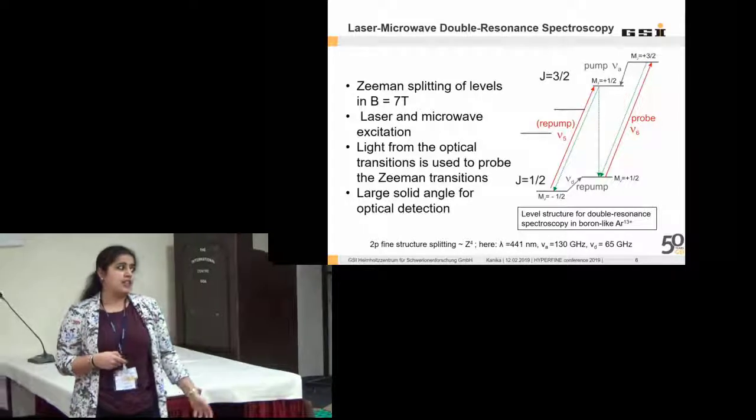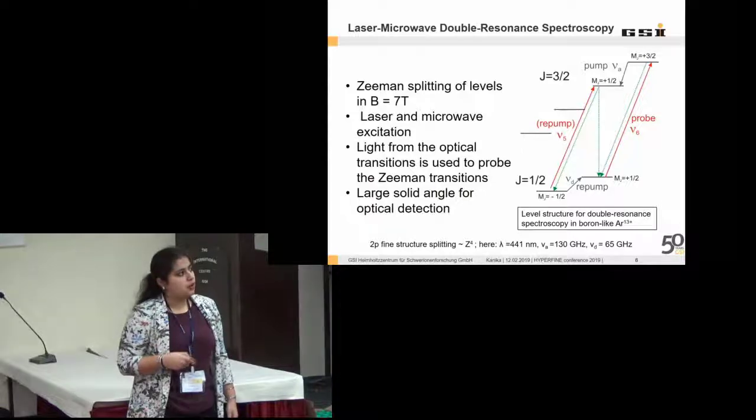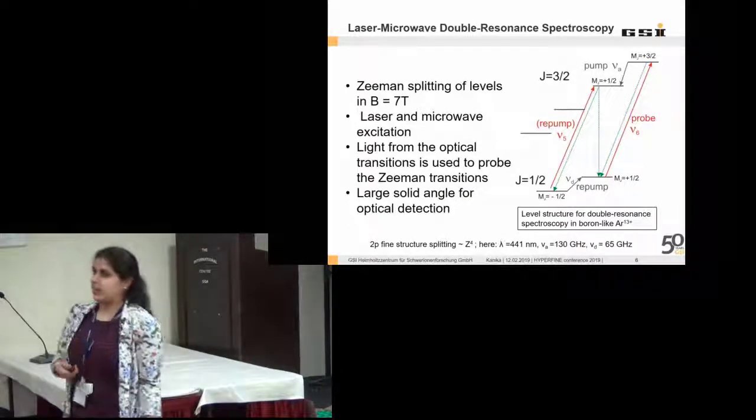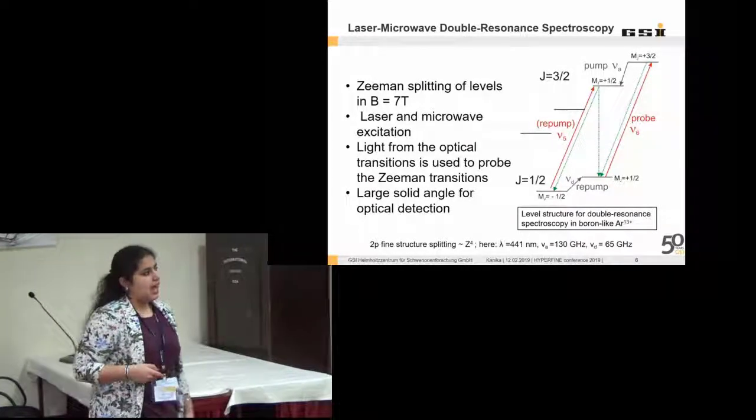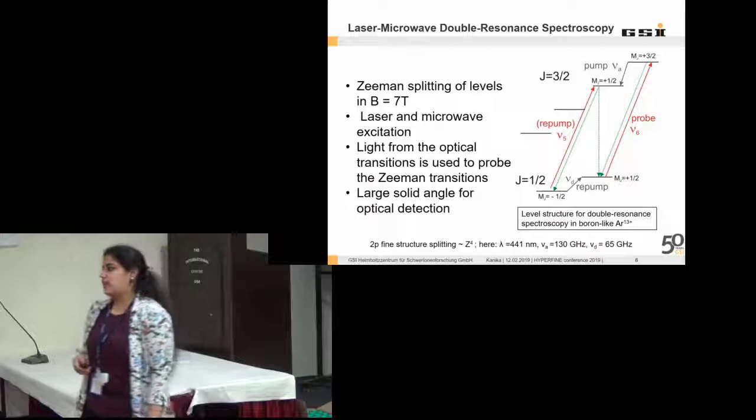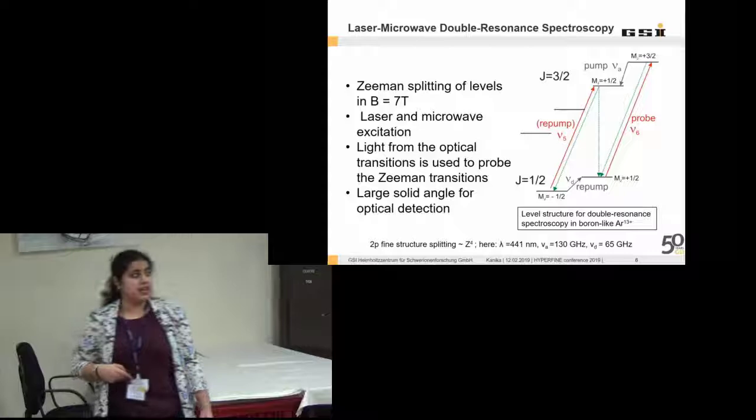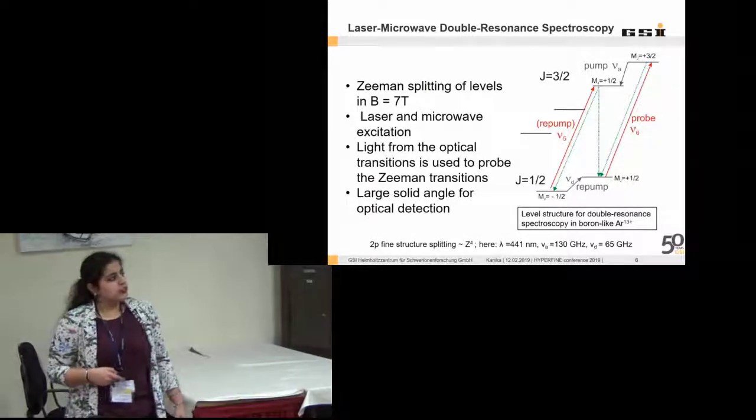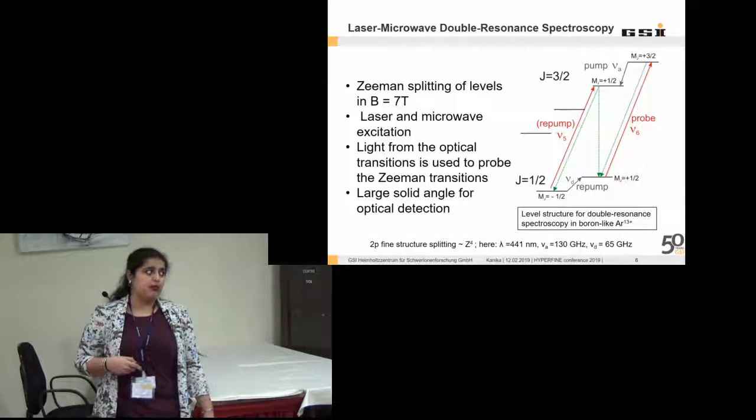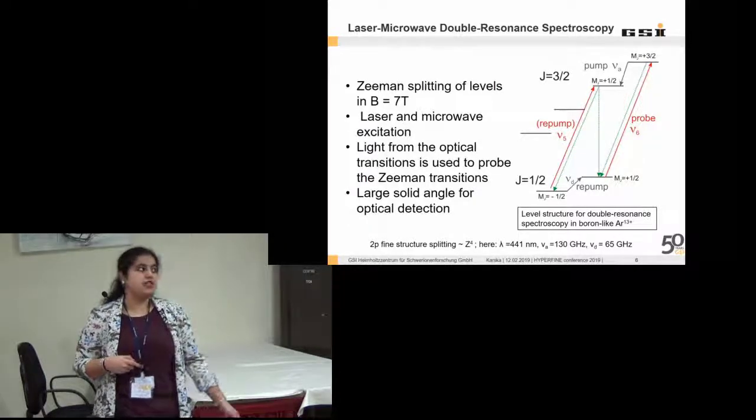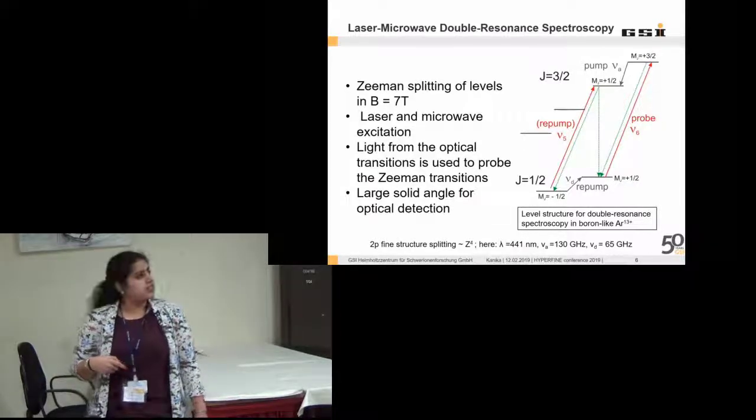For the case of argon 13+, this frequency omega 6 is in the visible region. We have the wavelength of about 441 nanometers for this. The frequency omega A and omega D are in the microwave region. Omega A is 130 gigahertz and omega D is 65 gigahertz. When we excite a transition from state +1/2, 1/2 to 3/2, +3/2 state, some of the ions would be now present in this 3/2 state. Because the ions will decay by only one mode to 1/2 state, there would be a fluorescence observed.